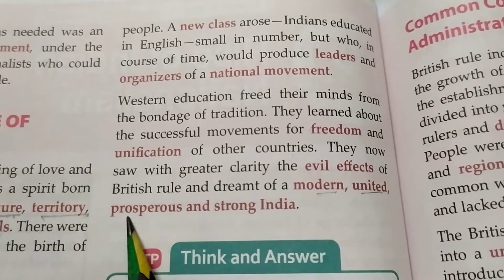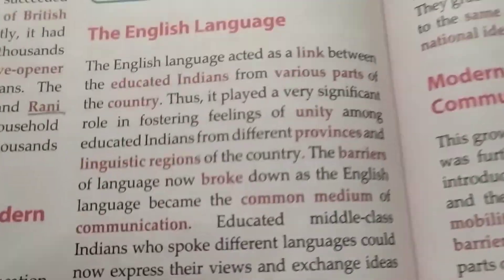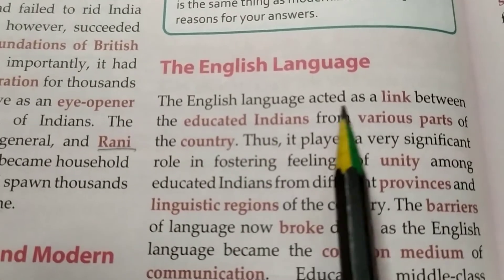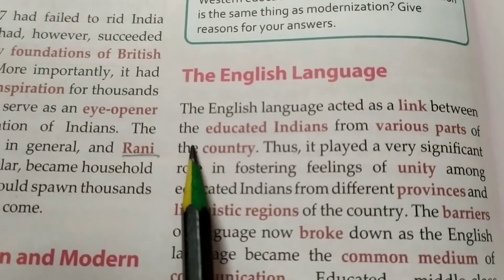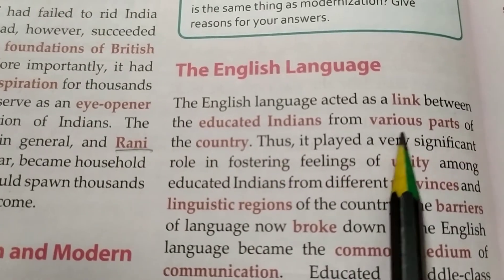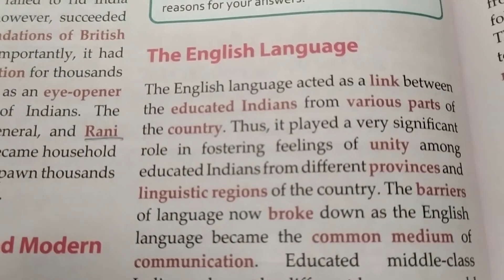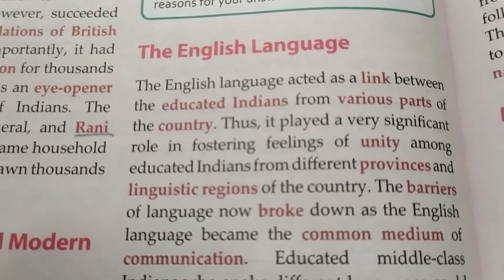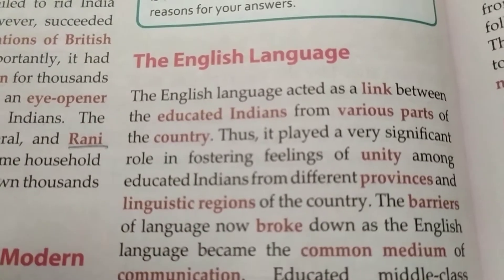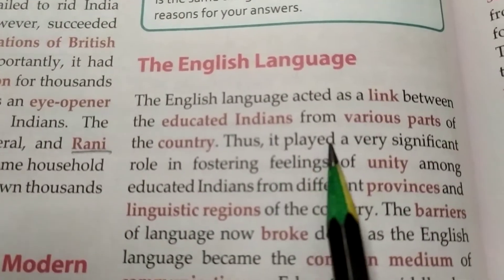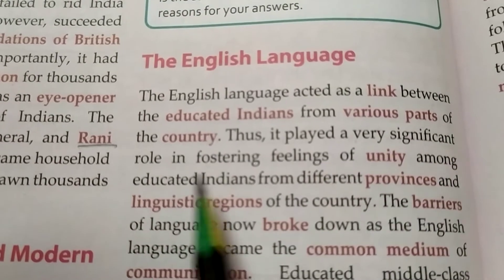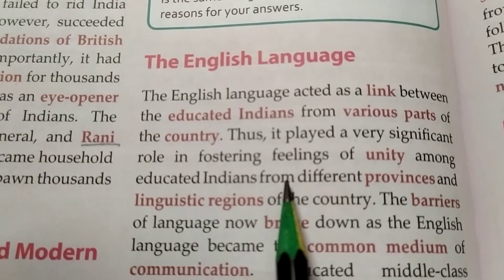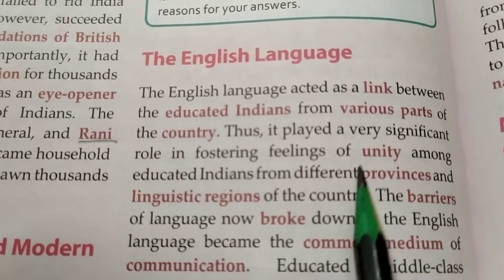The English language acted as a link between the educated Indians from various parts of the country. Thus it played a very significant role in fostering feelings of unity among educated Indians from different provinces — that means different states and linguistic regions of the country.